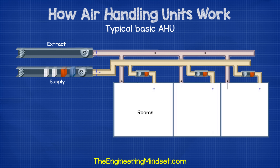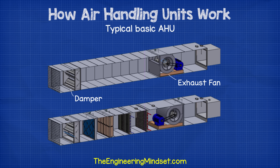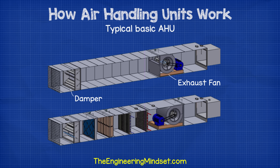Then we have the ductwork which sends the air around the building to the designated areas. We'll also have some ductwork coming back, bringing all the used air from the building back to a separate part of the AHU. This return AHU is usually located near the supply but it doesn't have to be — it can be located elsewhere in the building. The return AHU in its simplest form has just a fan and a damper inside. The fan pulls air in from around the building and pushes it all the way out into the atmosphere, and the damper is located at the exit of the AHU housing and will close when the AHU turns off.